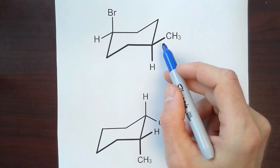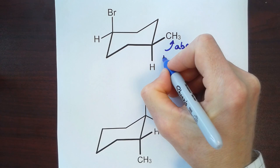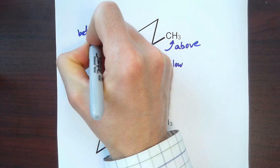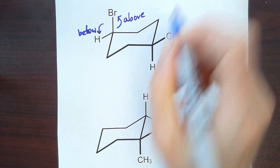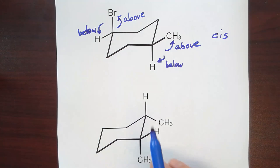So if we look at this, we notice that this top example has a methyl group that's above the plane and a hydrogen that's below. If we look over here, the hydrogen is below and the bromine is above. So this stereoisomer would be cis, because the methyl group and the bromine are both above the ring.